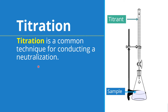In titration, common equipment is shown in this picture here. We need a burette to control the speed of the solution with the stopper. The liquid or solution that we add into the burette we call the titrant. Normally we know the concentration of this solution. In the flask we add the solution that we call the sample, or in some textbooks it is called the analyte. It is a solution whose concentration we want to analyze.